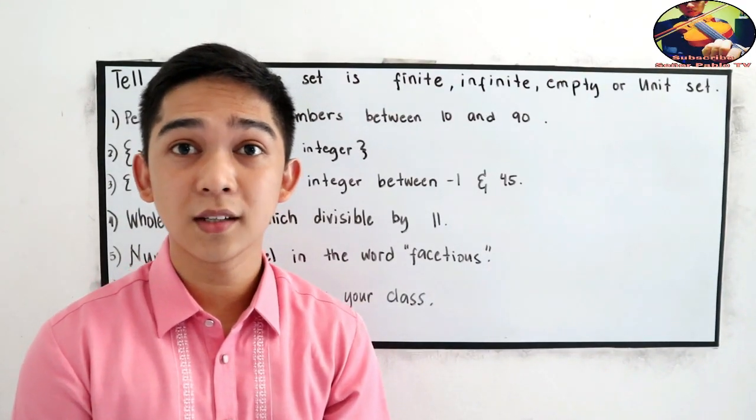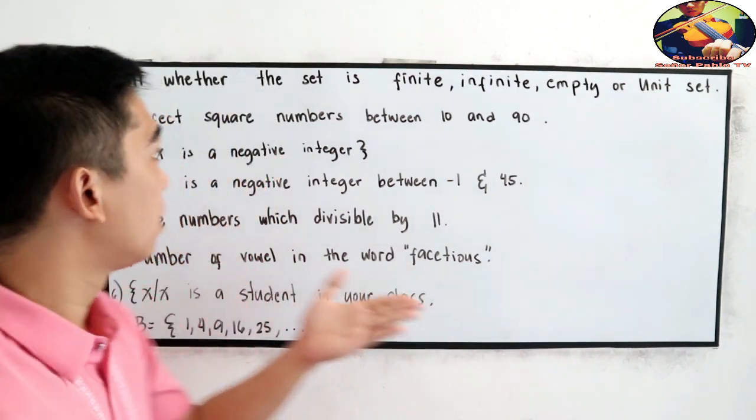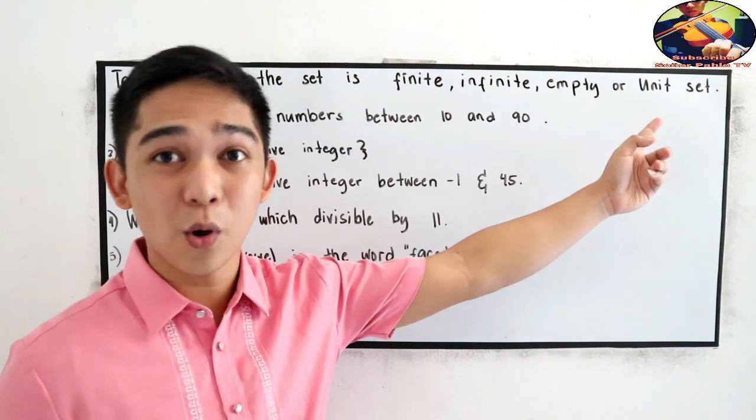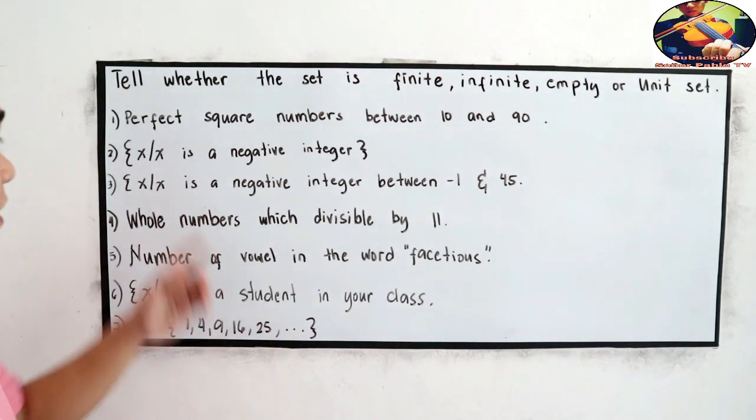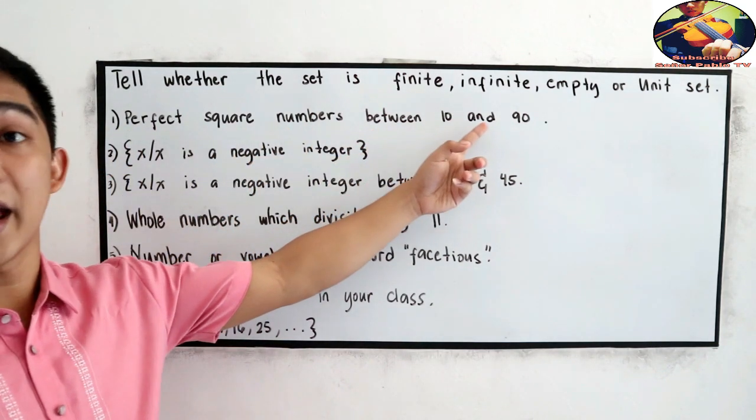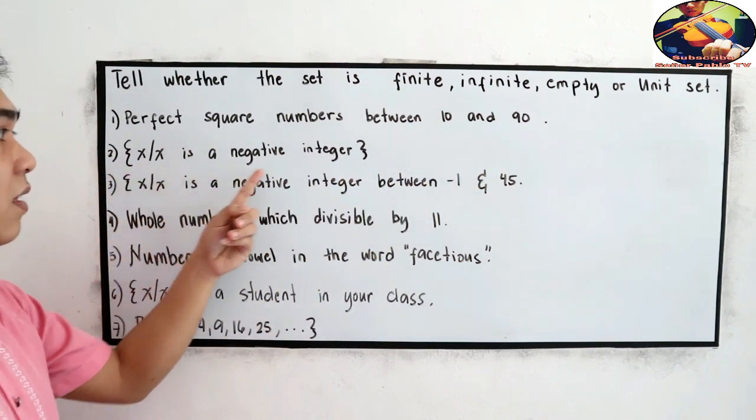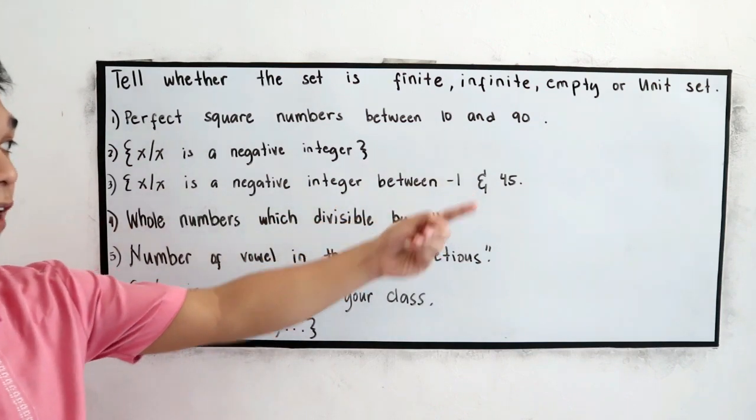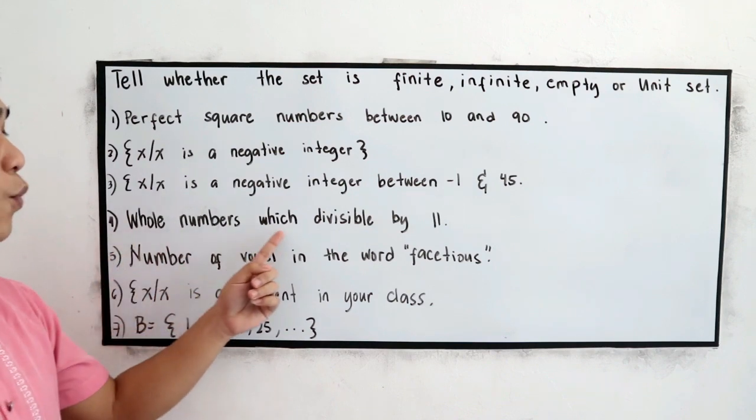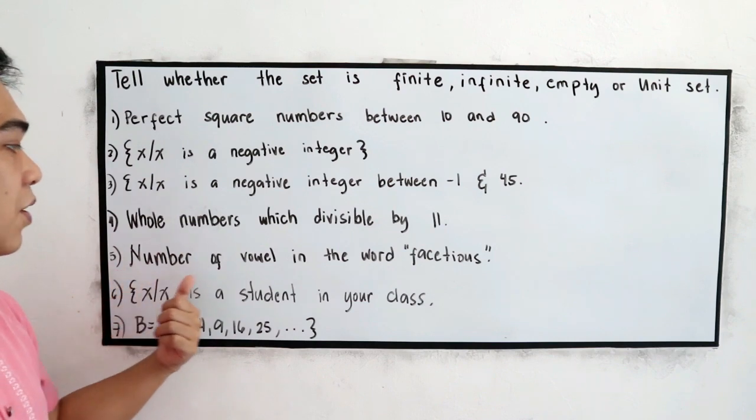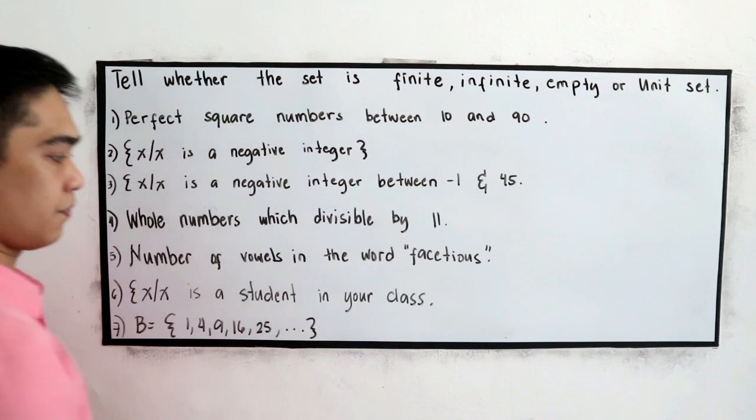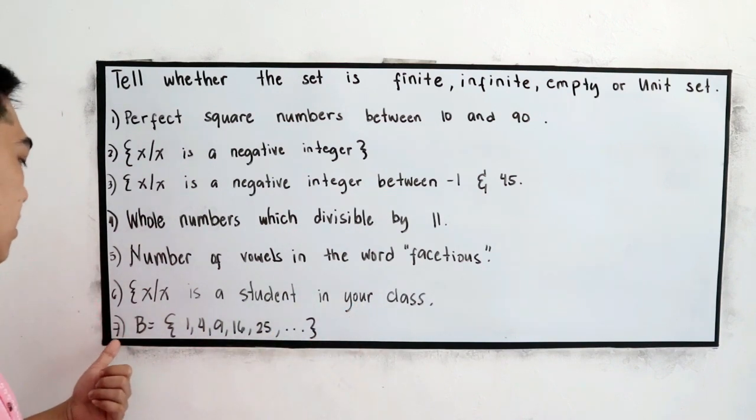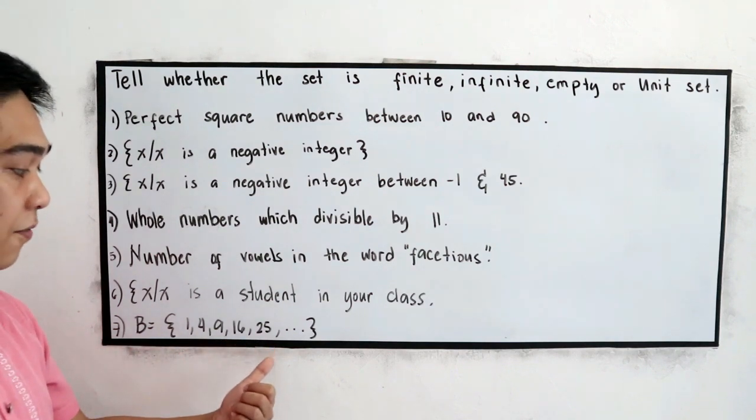This time I want you to answer the following examples in our whiteboard. Tell whether the set is finite, infinite, empty, or unit set. You can pause this video if you want to answer. Number one, perfect square numbers between 10 and 90. Number two, x such that x is a negative integer. Number three, x such that x is a negative integer between negative 1 and 45. Four, whole numbers which divisible by 11. Five, number of vowels in the word fetus. Six, x such that x is a student in your class. Seven, B is equal to one four nine sixteen twenty five and the ellipse sign.